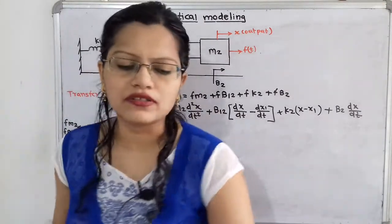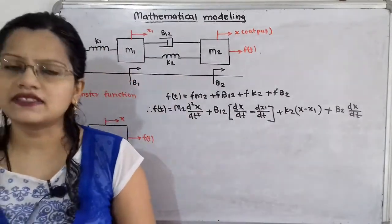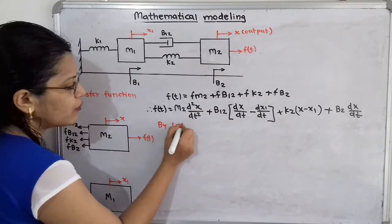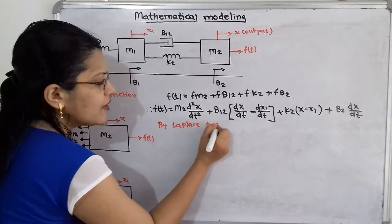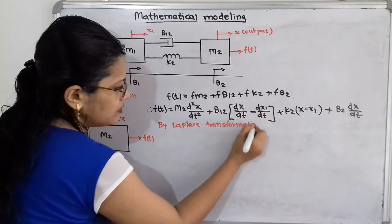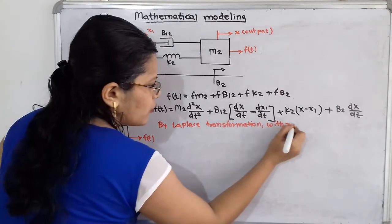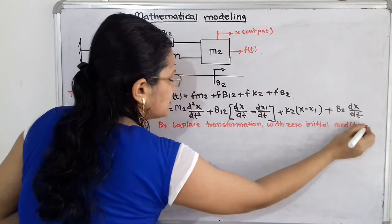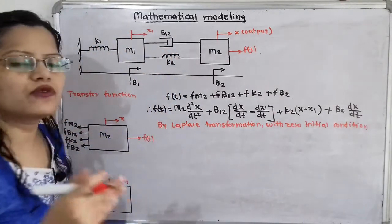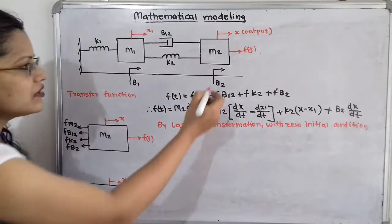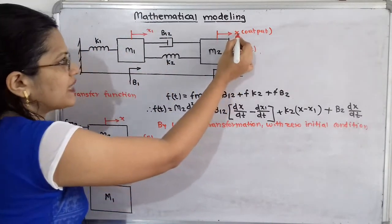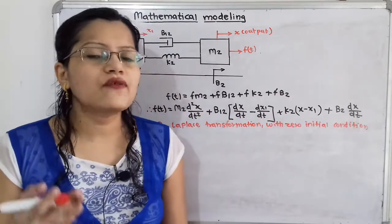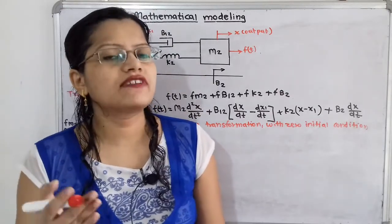To find the transfer function, we convert this equation into the Laplace domain with zero initial conditions. In the Laplace domain, time variable T becomes S, and F(T), x, and x1 — which are functions of time — are transformed accordingly.